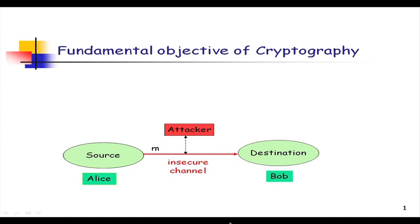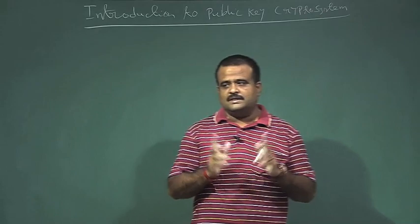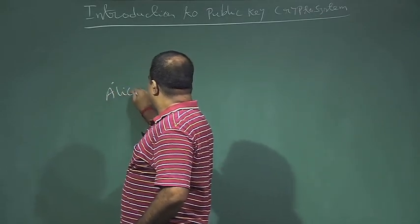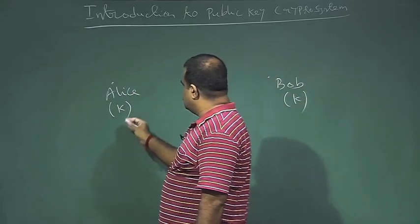The fundamental objective of cryptography is this: there are two parties, Alice and Bob. Alice is choosing a plaintext or message from a source and wants to communicate to Bob over an insecure channel. This channel is captured by the attacker. So how can we securely communicate over an insecure channel? That is the fundamental objective of a cryptosystem.